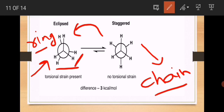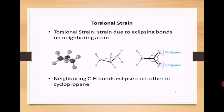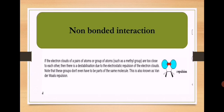This ring strain caused by the eclipsed form is called torsional strain. In the staggered form of the chain, atoms are far apart, so there is no strain and the compound is more stable. But when the staggered form converts to the eclipsed form in the ring, atoms come close together, ring strain occurs, and stability decreases. Torsional strain is due to the eclipsing of bonds between neighboring atoms — when a straight-chain compound forms a ring, atoms become eclipsed, distance decreases, they disturb each other through repulsion, and stability is reduced.